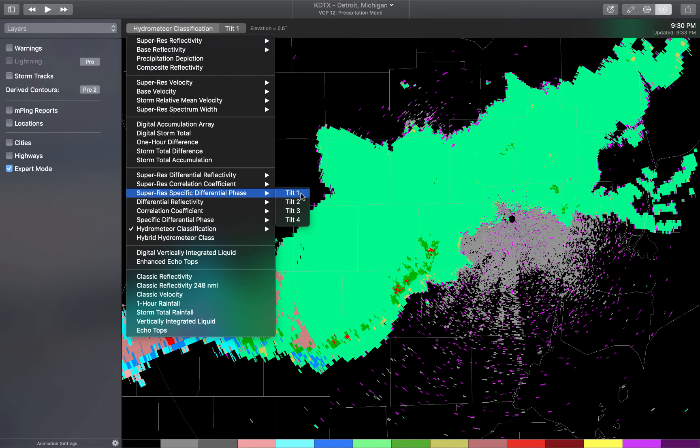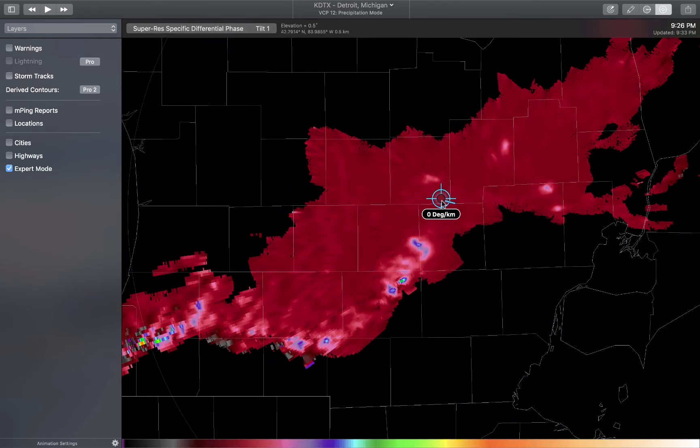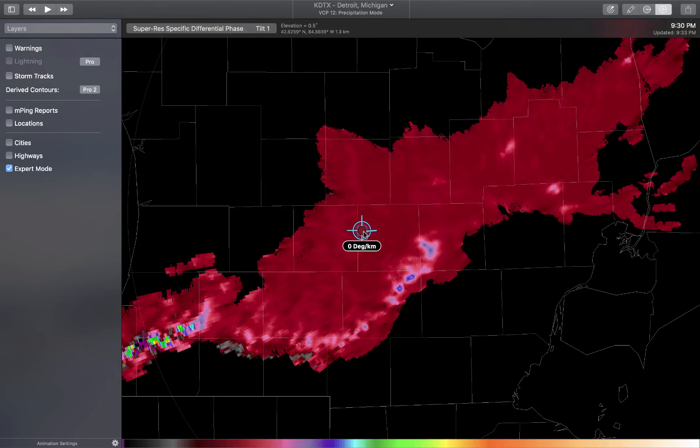And finally, we can look at the specific differential phase, same tilt. And again, it's pretty close to zero everywhere. But in the intense convection, we see values one, two degrees per kilometer, not unusual for KDP in rain.